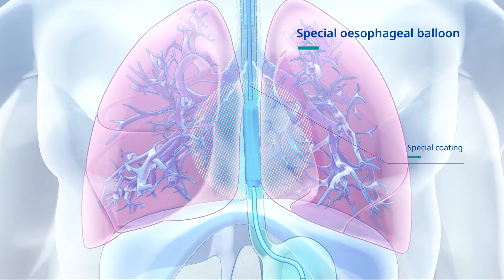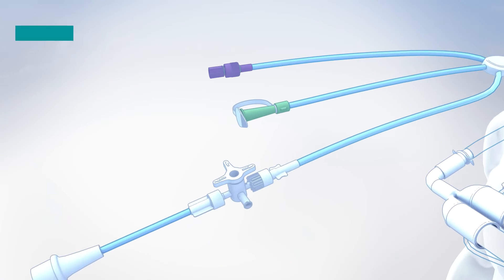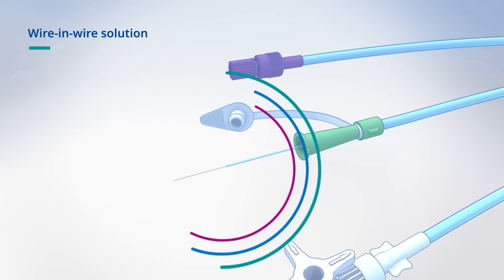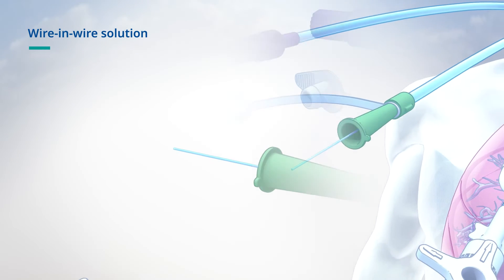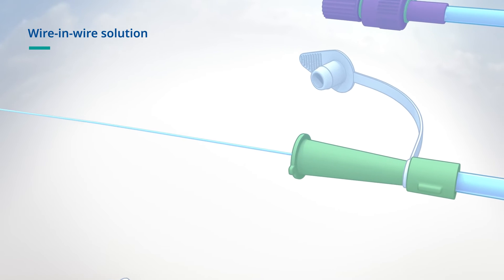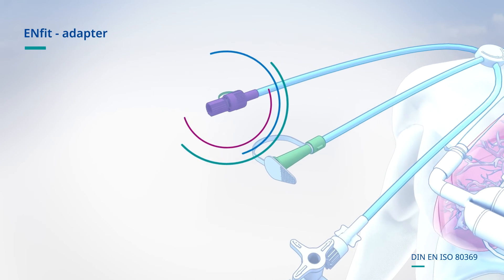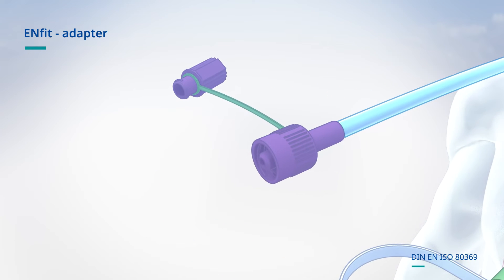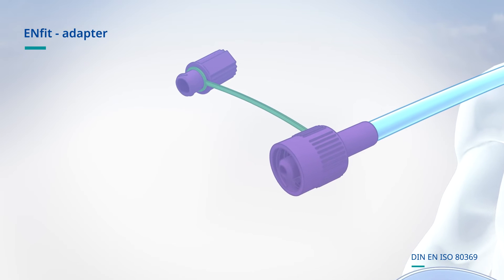Simplified placement of the modified gastric tube is supported by a special coating. Easier retraction of the insertion wire is enabled by an innovative wire-in-wire solution, so the inner wire can be removed first. This reduces the pressure on the outer wire, which can then be removed more easily in a second step. The integrated ENFIT safety adapter allows direct connection to feeding pumps without additional connectors or accidental disconnections during ongoing operation.